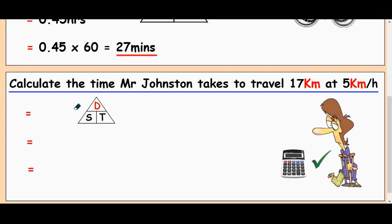Okay. Last question. Calculate the time Mr. Johnson takes to travel 17 kilometers at 5 kilometers per hour. I was inspired by this. He hurt his leg quite a few years ago. He wasn't walking very fast. That's where this question came from.